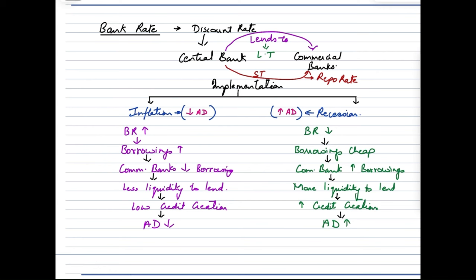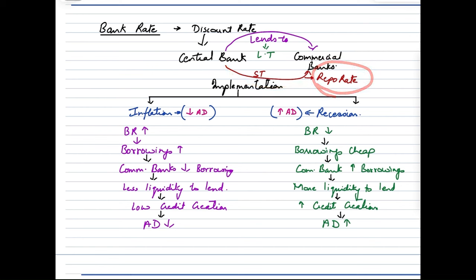Now let's look at the bank rate and repo rate. The bank rate is also called the discount rate — it is the rate at which the central bank lends money to commercial banks. When the central bank lends to commercial banks for a long-term period, that rate is called the bank rate. When it is lending for a short-term purpose, it is called the repo rate or repurchase rate.